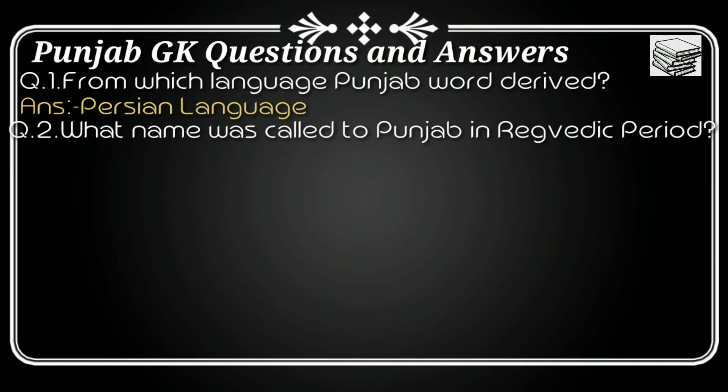Question number two: What name was given to Punjab in the Rig Vedic period? The answer is 'Sapt Sindhu,' because at that time there were seven rivers flowing through Punjab.